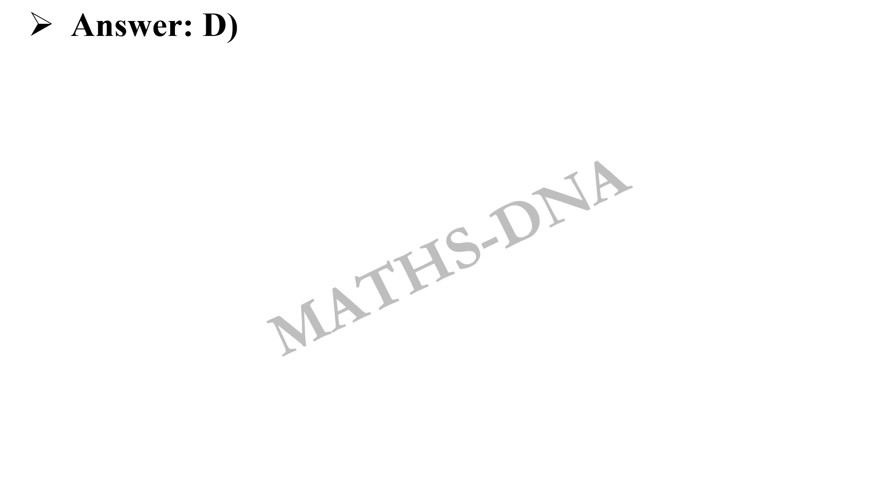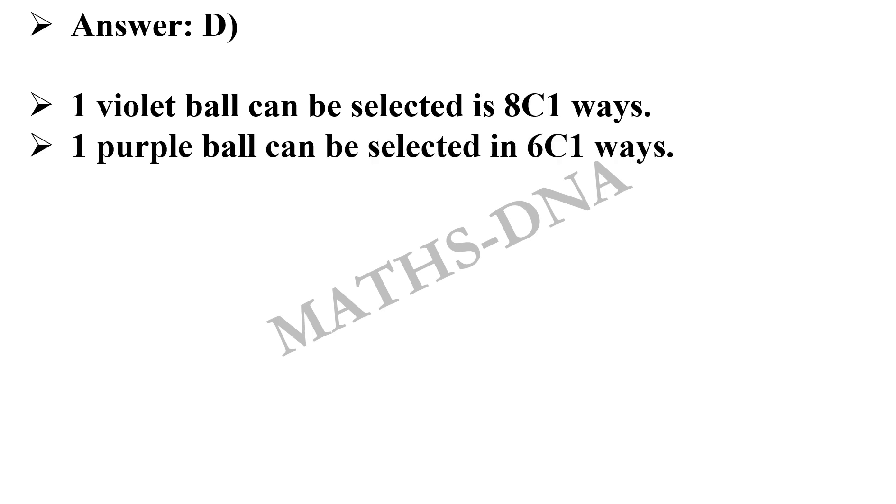Now, the answer will be option D and let us see how. Firstly, 1 violet ball can be selected from 8 violet balls in 8C1 ways. Secondly, for 1 purple ball, it will be 6C1, and third, for 1 magenta ball, it will be 4C1. Remember, we have to select 3 balls and each of them has to be of different color.